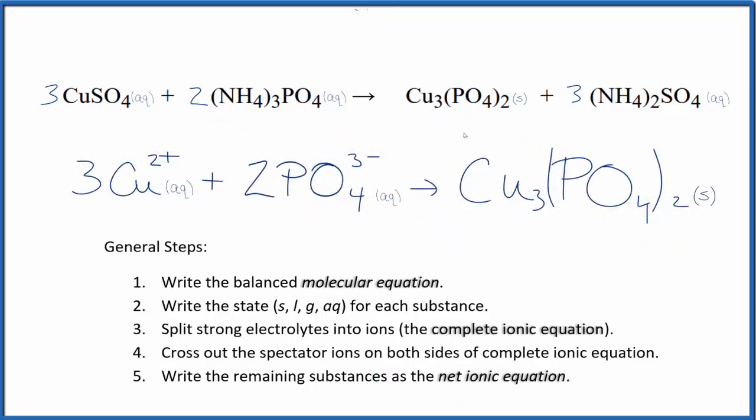And this is the balanced net ionic equation. You'll see the atoms are balanced. And if you look at the charges, three times two plus is six plus, two times three minus is six minus. That gives us a net charge of zero. And on the product side, this copper two phosphate is neutral, so its net charge is zero as well.